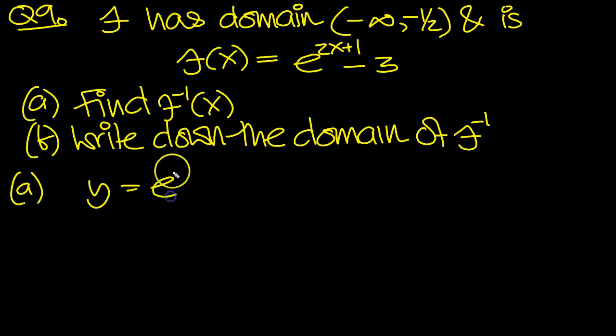First of all, y is equal to e to the 2x plus 1 minus 3. Move the 3 over then, is e to the 2x plus 1. Then write it in log form, so you move that down to be the base number.